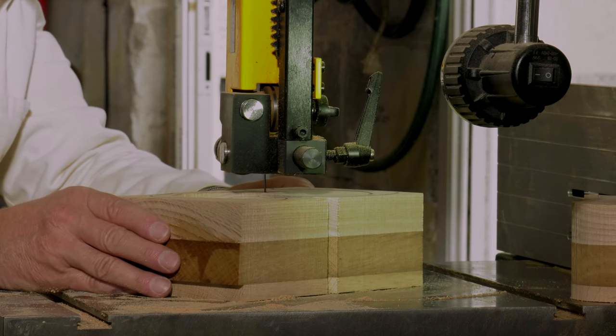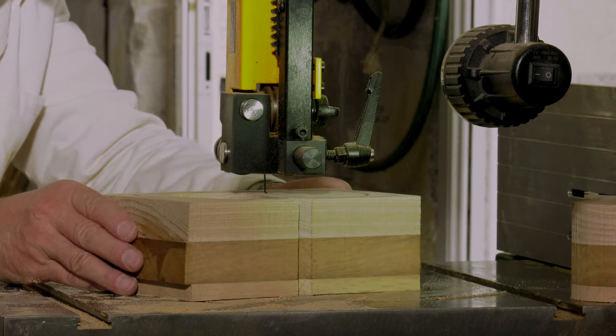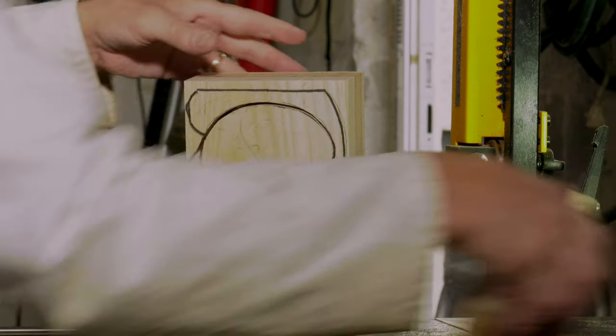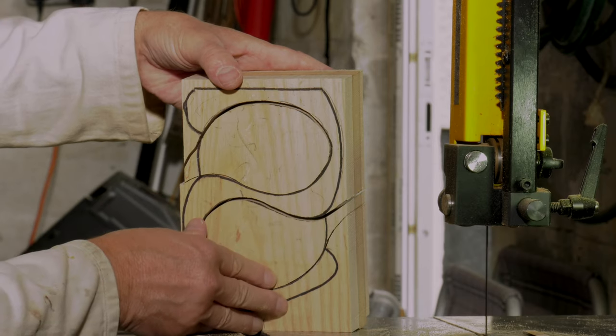The shape of the drawers is then cut out. This is where the bandsaw comes into its own as just about any shape is possible when the correct blade and cutting sequence is chosen.